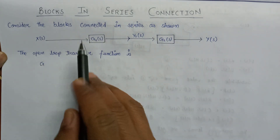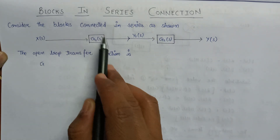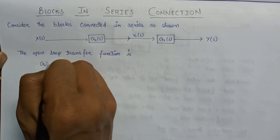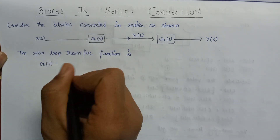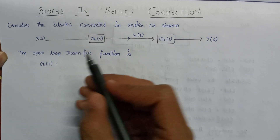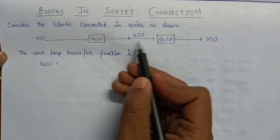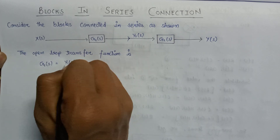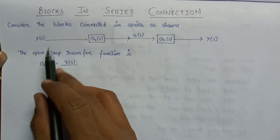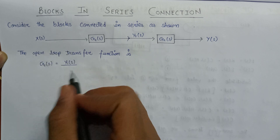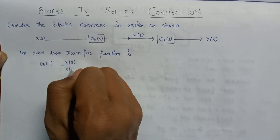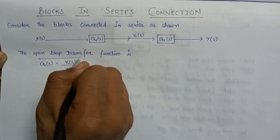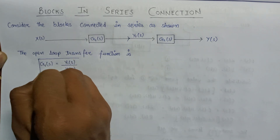First of all, we will write the open loop transfer function for the first block. G1(s), the open loop transfer function, will be equal to the Laplace transform of output, that is Y1(s), divided by the Laplace transform of input, that is X(s). This is the open loop transfer function for the first block.